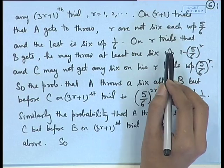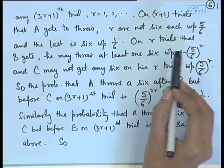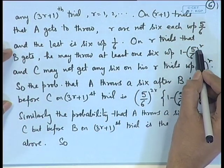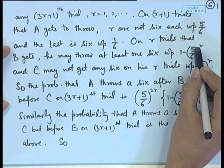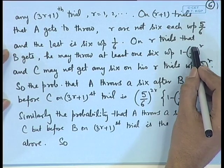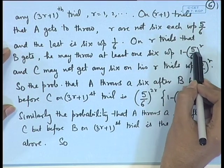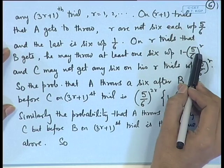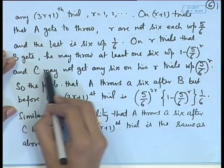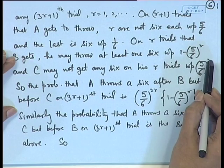For A to be second, either B or C must get a 6. Consider B getting a 6: the probability that B gets no 6 in a single trial is 5/6, so in R trials it is (5/6)^R, meaning 1 − (5/6)^R is the probability that B gets at least one 6. If B gets at least one 6, then C must not get any 6, giving probability (5/6)^R for C over R trials.